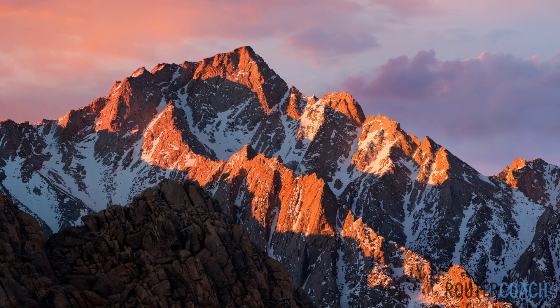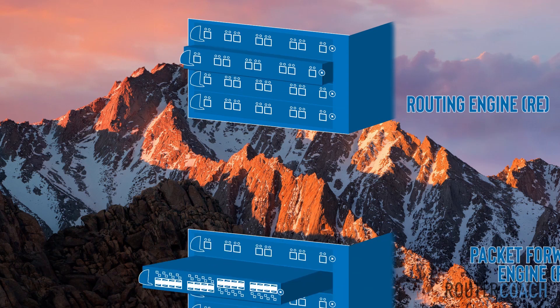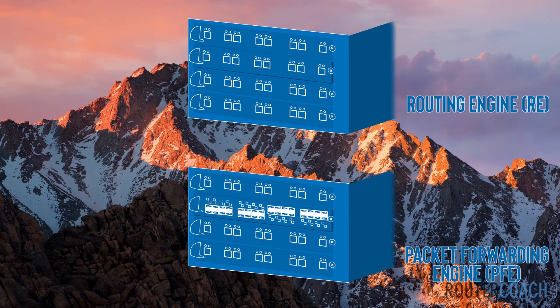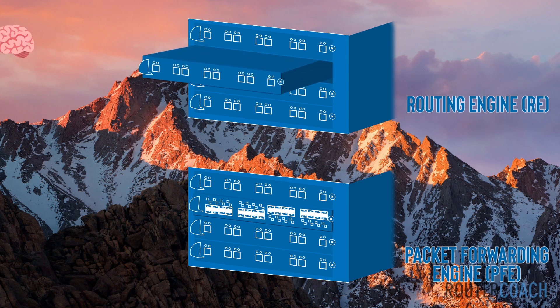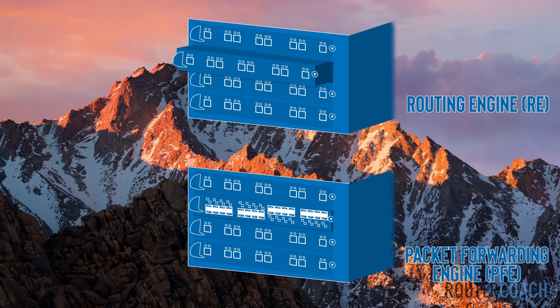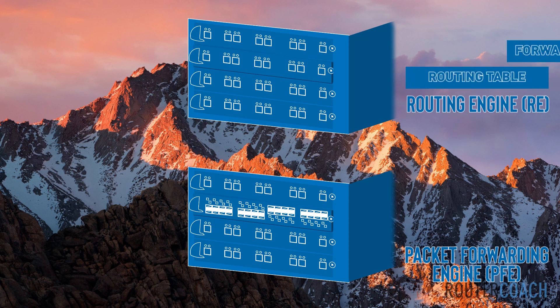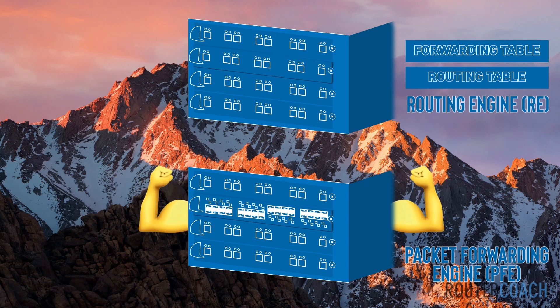Junos devices separate the control plane and the forwarding plane. The processes that control routing and switching protocols are separated from the processes that forward frames, packets, or both through the device. There are two pieces of hardware on most Junos devices: the routing engine and the packet forwarding engine. Usually the routing engine and PFE sit on the same device but they are two separate pieces of hardware — you can think of them as two separate line cards within the same device. The routing engine acts as the intelligent piece of the platform, the brain, responsible for maintaining the routing tables and forwarding tables.